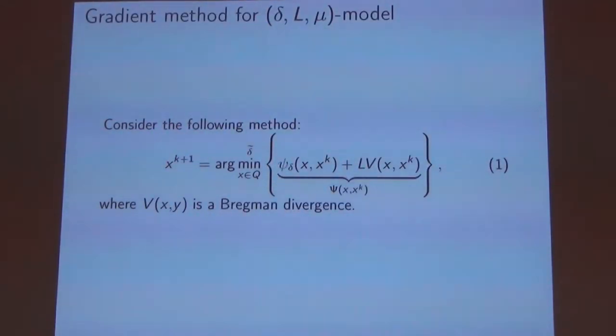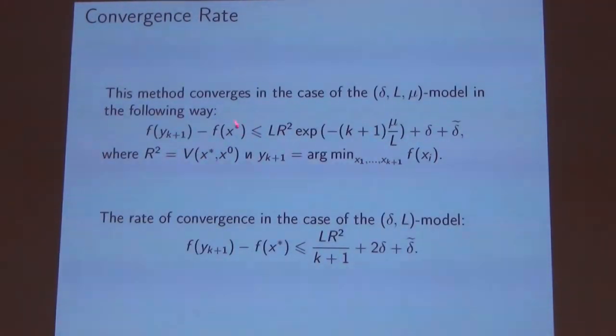At first let's consider the first method, it's a gradient method. We obtain this convergence rate for it in the case of the Delta-L mu model. We can see that it's linear and it's the same convergence rate as for the same method for the Delta-L model.